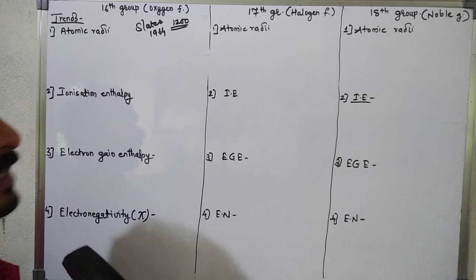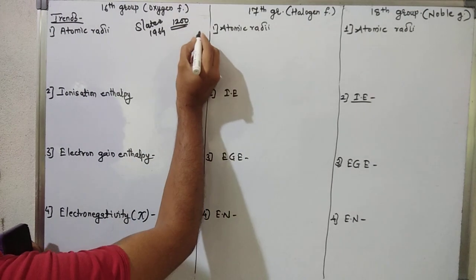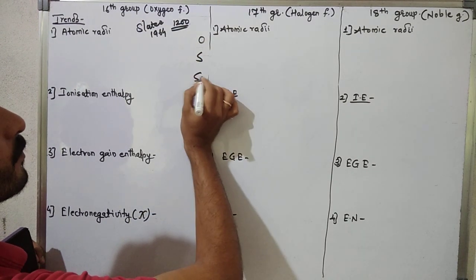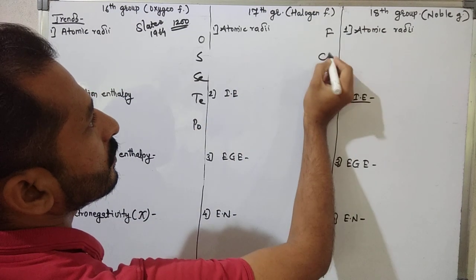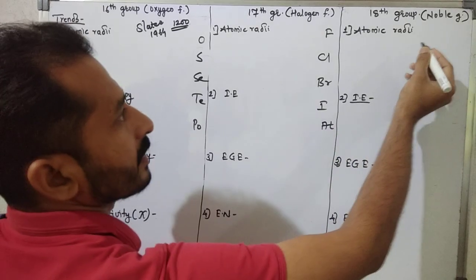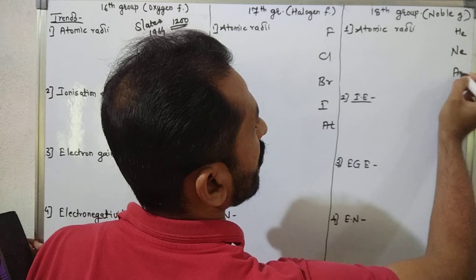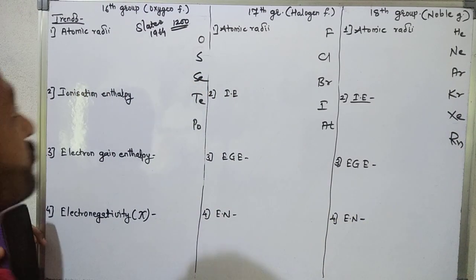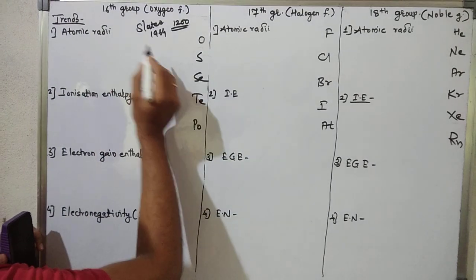Now for atomic radii, we discuss the elements in the 16th group, the 17th group — fluorine, chlorine, bromine, iodine, astatine — and the 18th group — helium, neon, argon, krypton, xenon, and radon.